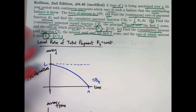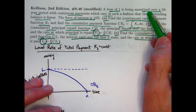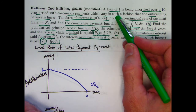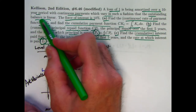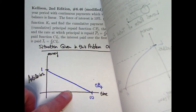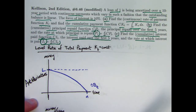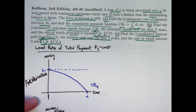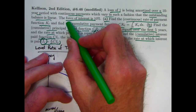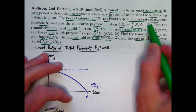These graphs pertain to the problem description itself, while others pertain to the more typical kind of situation. We've got a loan of 1 being amortized over a 10-year period with continuous payments — a continuous payment stream which vary in such a fashion that the outstanding balance is linear. The blue graph on the next page is a linear decreasing function — the outstanding balance function for this problem. The force of interest delta is 10% or 0.1. There are three parts: A, B, and C.